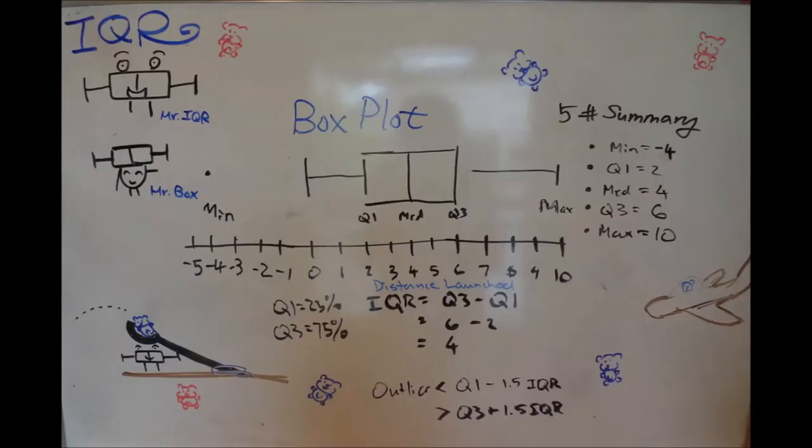In this example, a minimum of negative 4 is an outlier. So as you can see, IQR is a highly useful measurement with box plots.